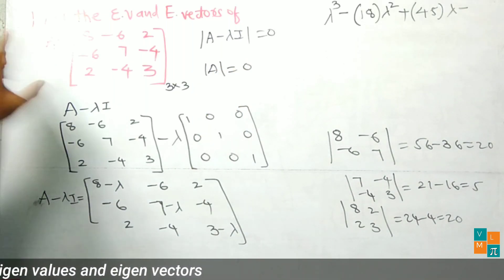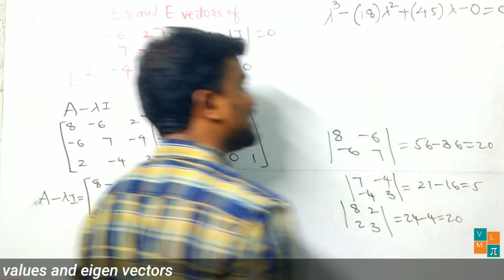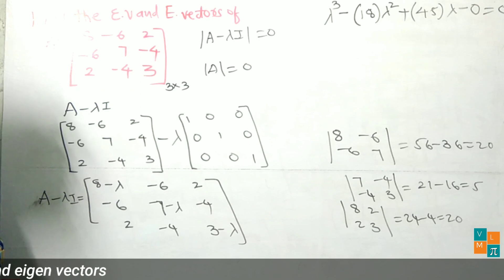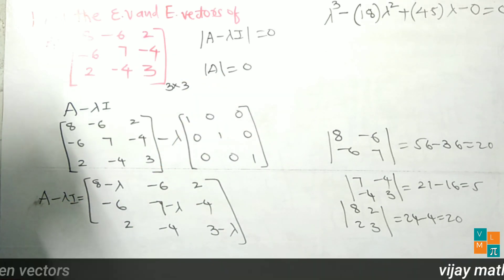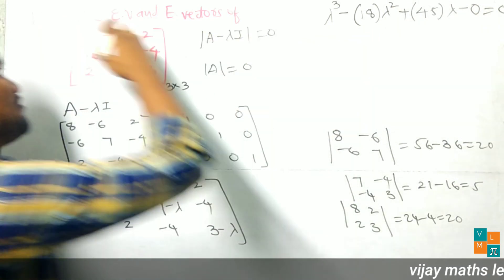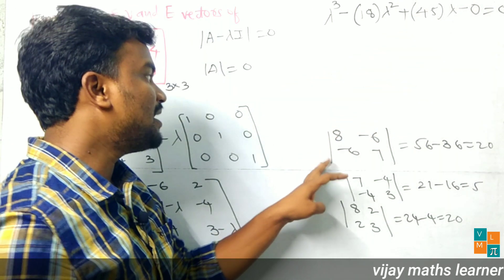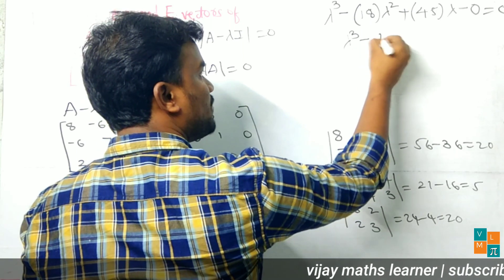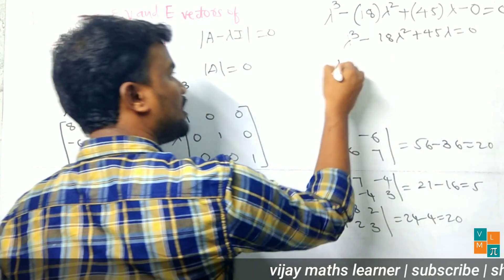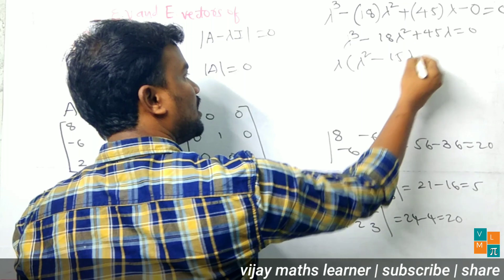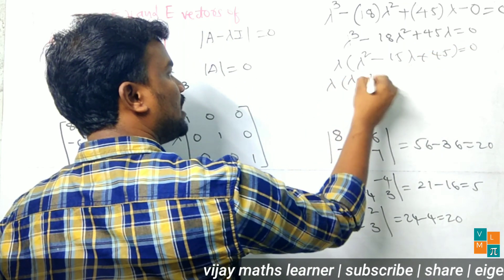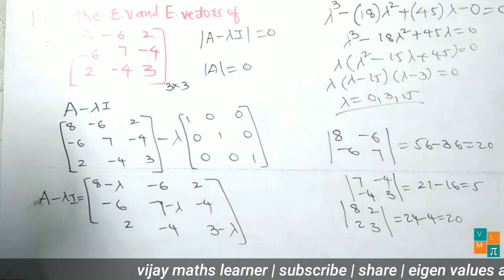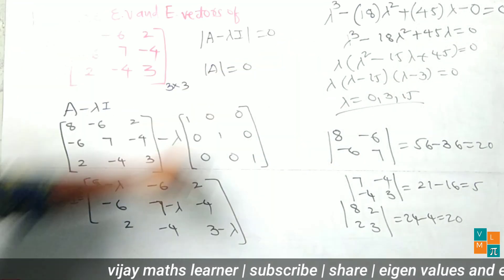The determinant of the full matrix A equals 0, so the characteristic equation is lambda cubed minus 18 lambda squared plus 45 lambda equals 0. Taking lambda as a common factor: lambda times (lambda squared minus 18 lambda plus 45) equals 0, which factors as lambda times (lambda minus 15) times (lambda minus 3) equals 0. The eigenvalues are lambda equal to 0, 3, and 15.